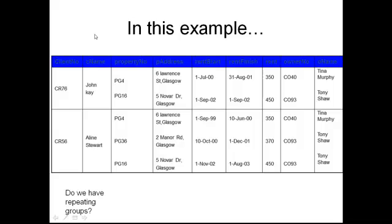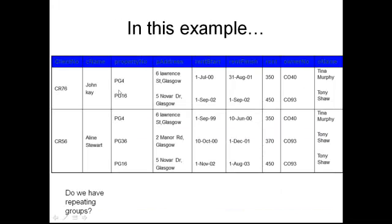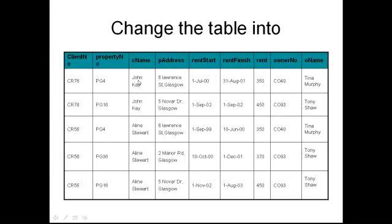In this example, do you have any repeating groups? Of course we have. Client number CR76 has two property numbers — that's a repeating group. It has two property addresses, two rental starts, and so on. CR56 has one customer name but three different property numbers, which is a repeating group. So we need to change this into a new table where client number has one field with one value, customer name has one value. All the fields now have one value instead of two.